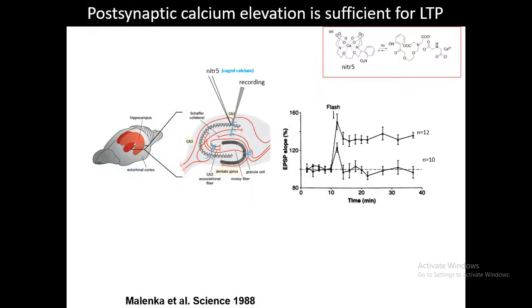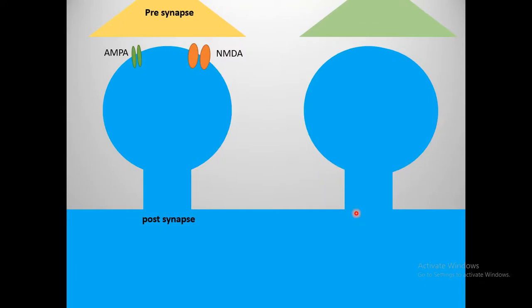To show that calcium is sufficient for LTP, researchers uncaged caged calcium in the post-synaptic region. After uncaging calcium in the post-synapse, synaptic strength increased — demonstrating that calcium is both necessary and sufficient for long-term potentiation.